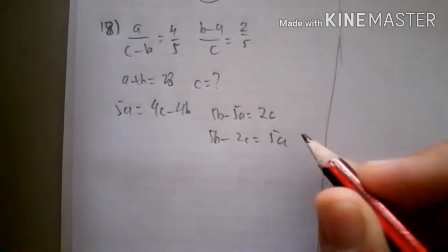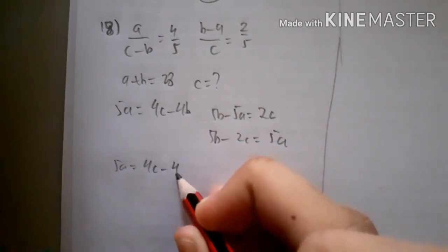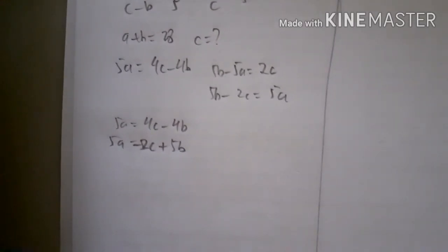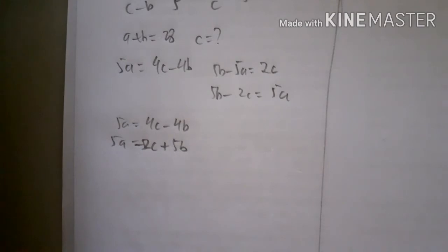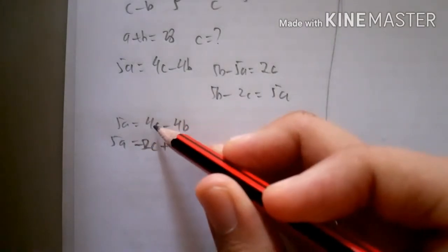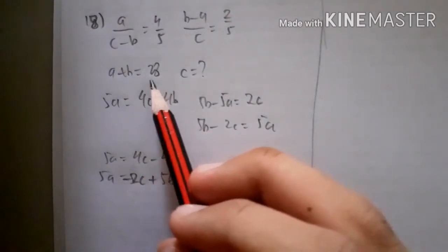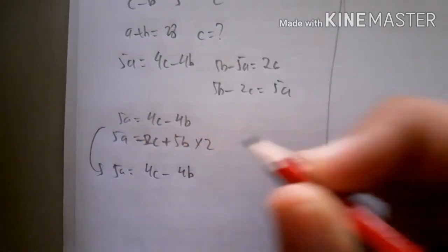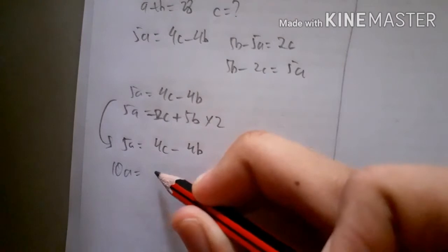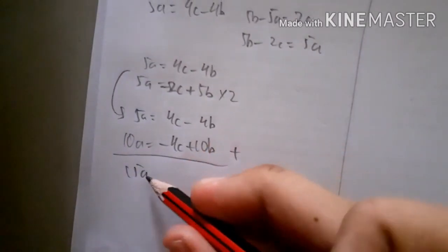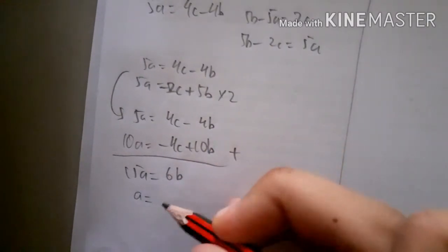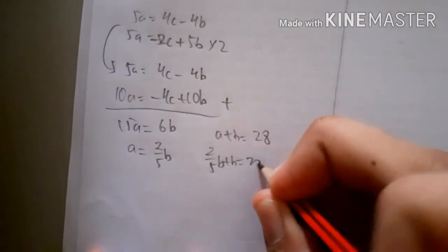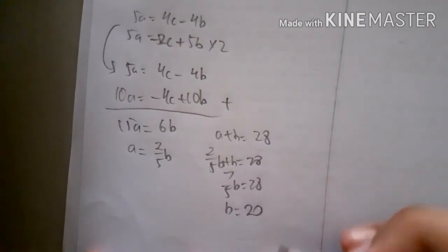From 5b - 2c = 5a, we substitute to eliminate c. Multiplying 5a = 4c - 4b by 2 gives 10a = 8c - 8b... adding equations yields 15a = 6b, so a = (2/5)b. Using a + b = 28: (2/5)b + b = 28, giving (7/5)b = 28, so b = 20 and a = 8.